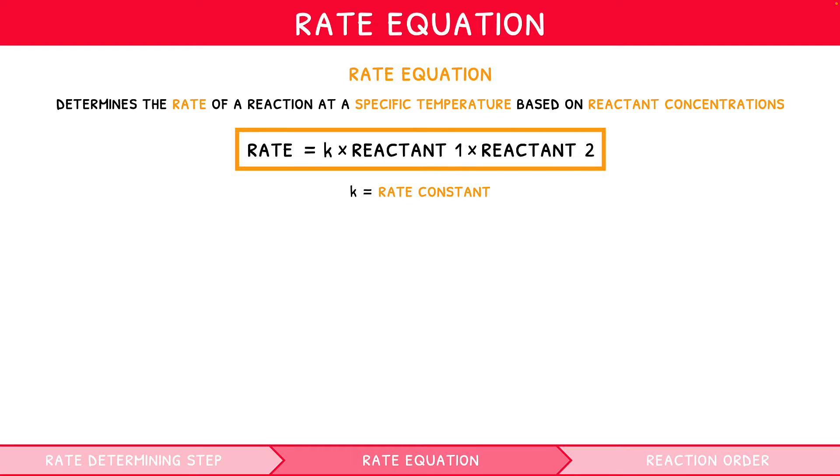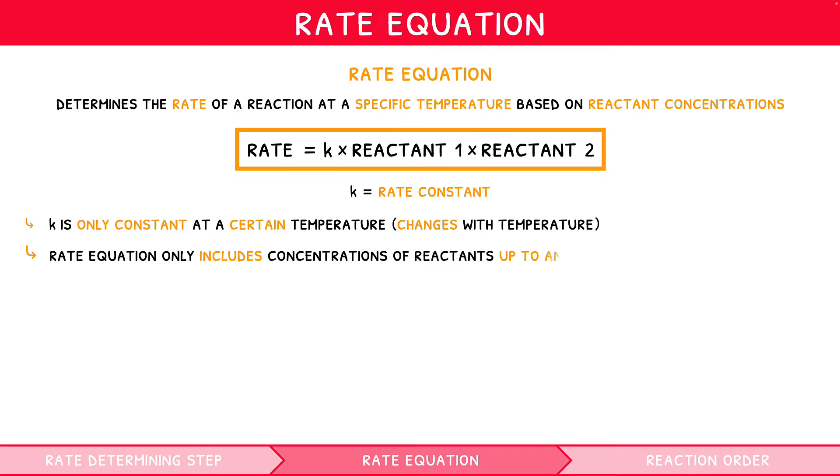There are two crucial points to understand with respect to the rate equation. K is only constant at a certain temperature, and so it changes with temperature. And the rate equation only includes the concentrations of the reactants up to and including the rate-determining step.